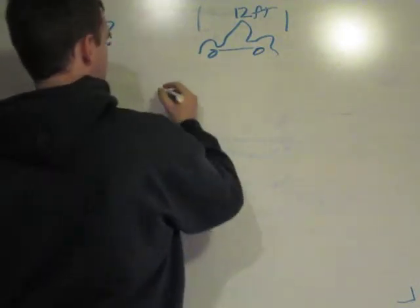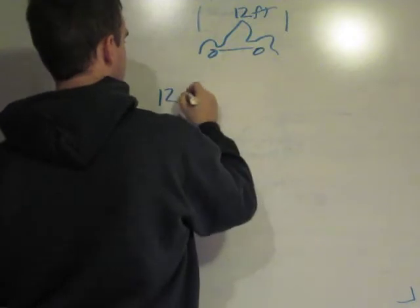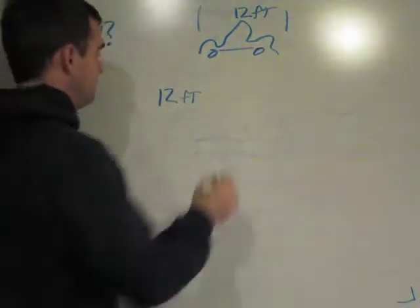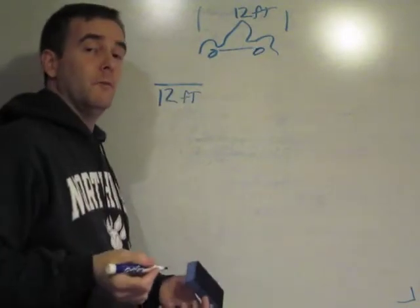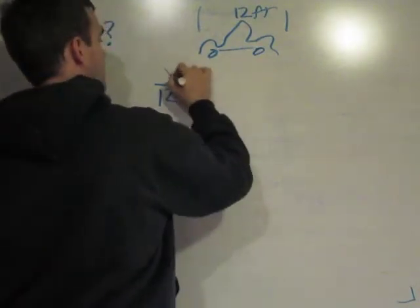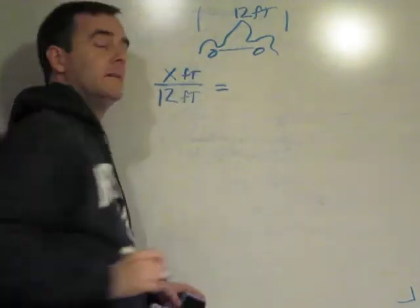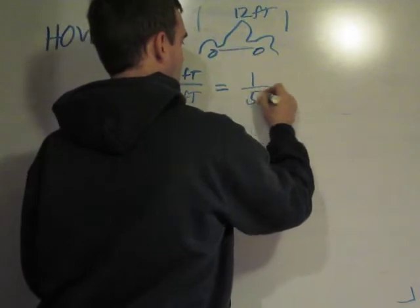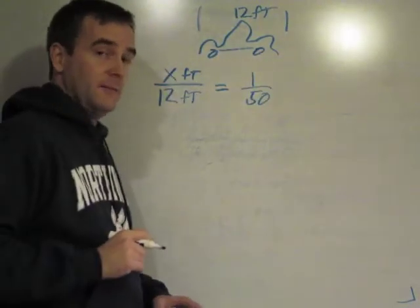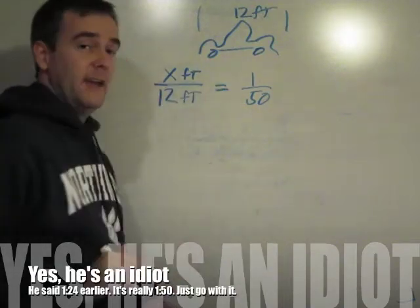So if my original car is 12 feet long, and I want to know how long it will be at scale, it's going to be the same as 1 to 50th, my scale for this model. So, how long is my car after I scale it down?